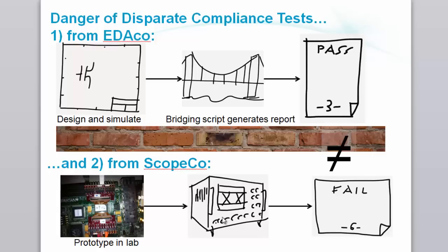Now you capture the waveforms, maybe DQ, DQS bursts, with your oscilloscope, and your oscilloscope vendor might provide an app that generates a compliance report. But now the report says fail. What happened? Is my physical prototype somehow different from my virtual simulation? Or is the EDA company's compliance test somehow different from the scope vendor's app? How do I correlate the two and get to the bottom of this mess?